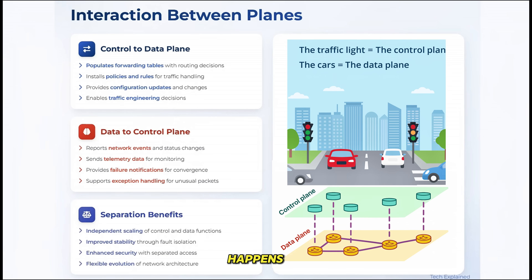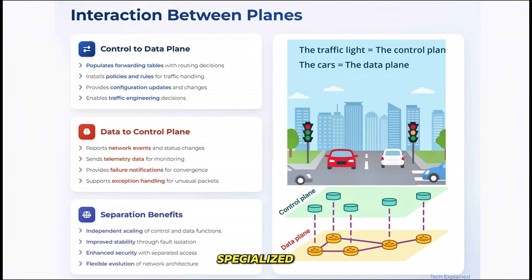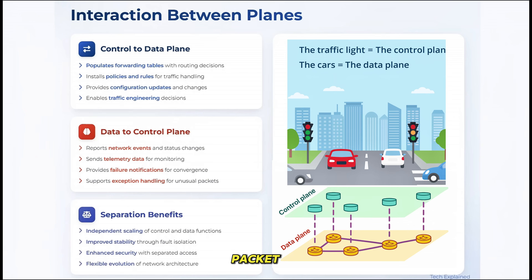Communication between the planes happens through various protocols and mechanisms. For example, in traditional routers, the control plane — running in the CPU — updates the forwarding table in the data plane, often implemented in specialized hardware. This separation of concerns is really important. By keeping the decision-making separate from the packet forwarding, we can optimize each plane for its specific task.